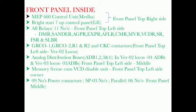Relays continued: VCDR, SR, FSR, SLBR, GRCO1, GRCO2, R1, R2 and CKC contacts — front panel top left side. For version 2 locos: NLOG Distribution Box X, ADB 1, 2, 3 and 4 — in version 2 locos there are 4 ADBs.